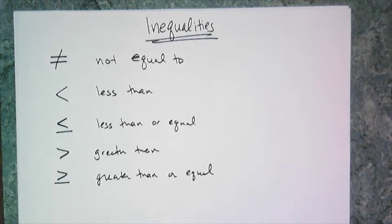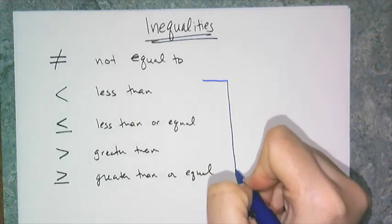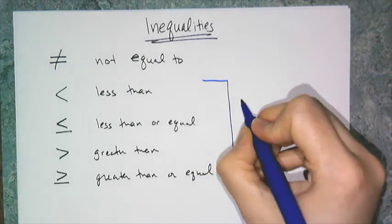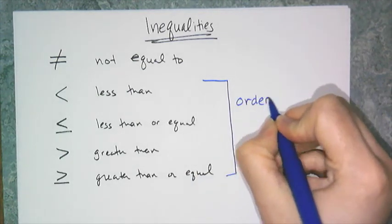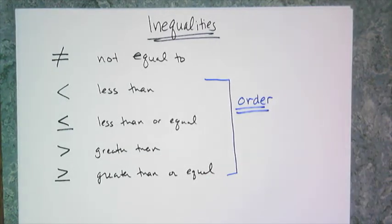We're only going to concern ourselves with these four, and these four are special symbols that talk about order. When I say order, I mean order on a number line. One number is greater than or less than another number, which tells you its relative position on the number line.